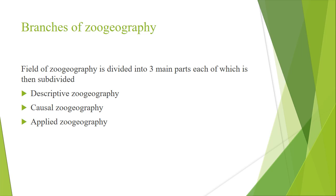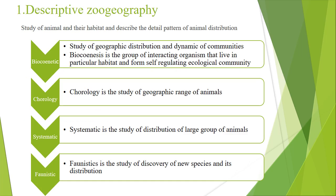These three groups are: descriptive zoogeography, causal zoogeography, and applied zoogeography. Descriptive zoogeography is the study of animals and their habitats, describing the detailed pattern of animal distribution. As the name indicates, 'descriptive' means to explain something in detail. Descriptive zoogeography is further divided into four branches: biokinetics, chorology, systematics, and faunistics.